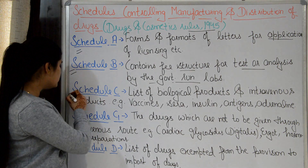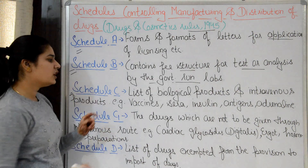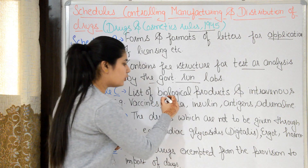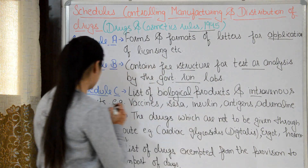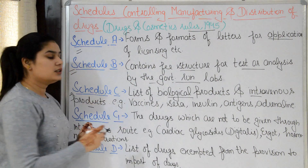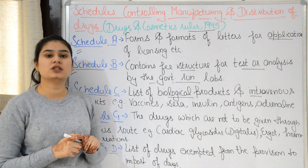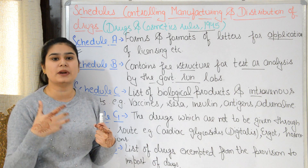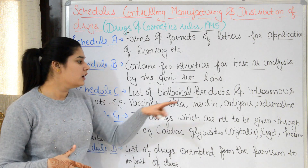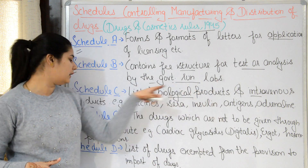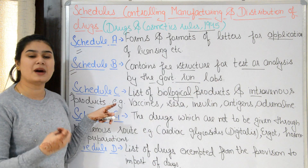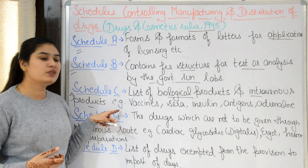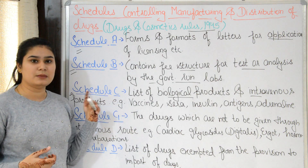Then there is Schedule C. Schedule C contains the list of biological products and intravenous products. Biological products are those obtained from plants or animals. Intravenous products are those given through the IV or parenteral route. These come under Schedule C.